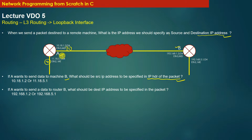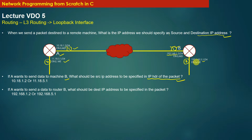Should the source IP address be the IP address of interface 1 or interface 2? Similarly, regarding the destination IP address: machine B also has two interfaces. Should machine A specify 192.168.1.2 (interface 1 of machine B) or 192.168.5.1 (interface 2 of machine B) as the destination IP address?